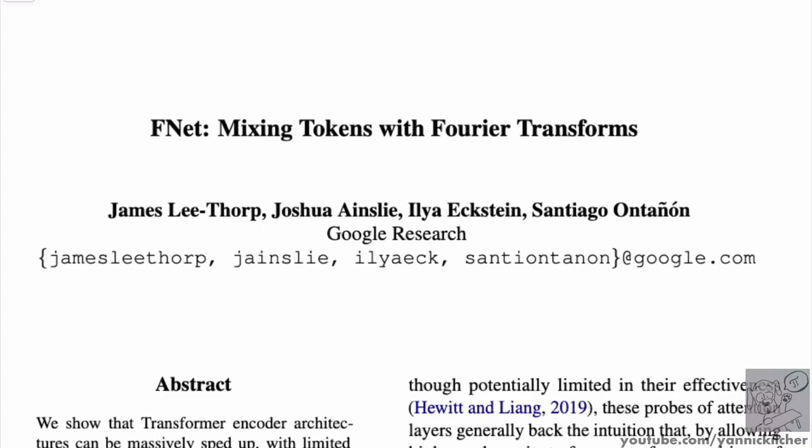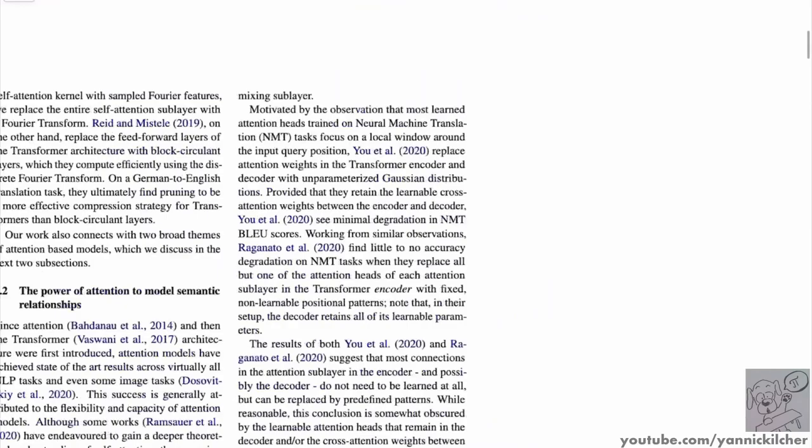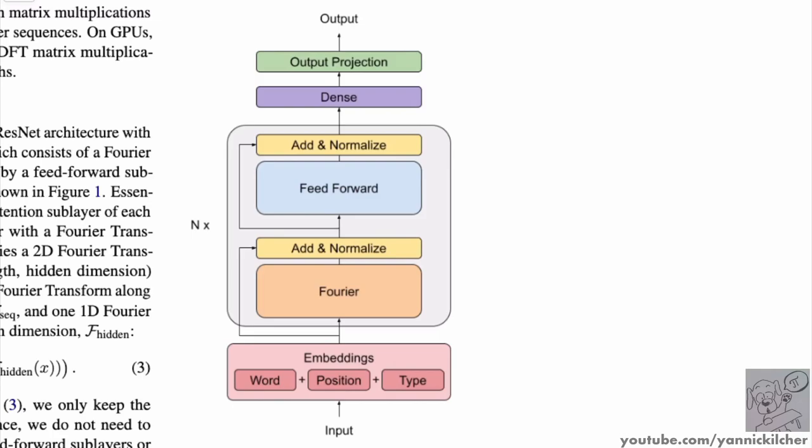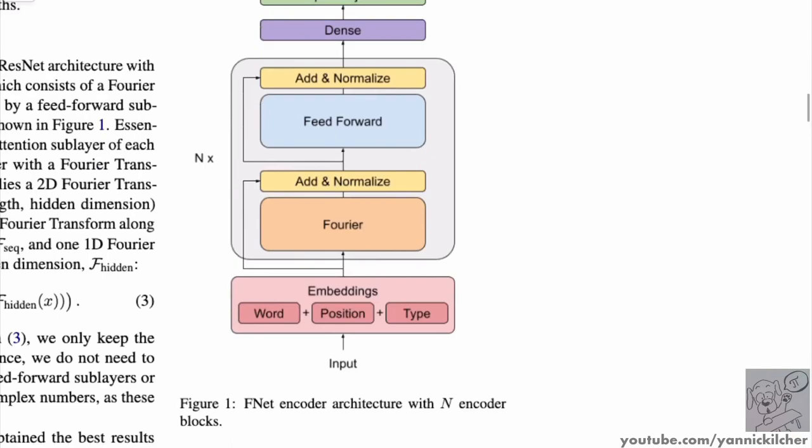Now we're going to get into why Fourier transforms. But essentially, they present a model that looks like this. If you've seen my video on attention, this should look very familiar. There is an input down here, then the input is split into words or word pieces. And then each of these word pieces gets a word embedding - this is a table where you look it up - it gets a position embedding, and maybe a type embedding. So if you want the most direct reference, go watch the video on BERT.